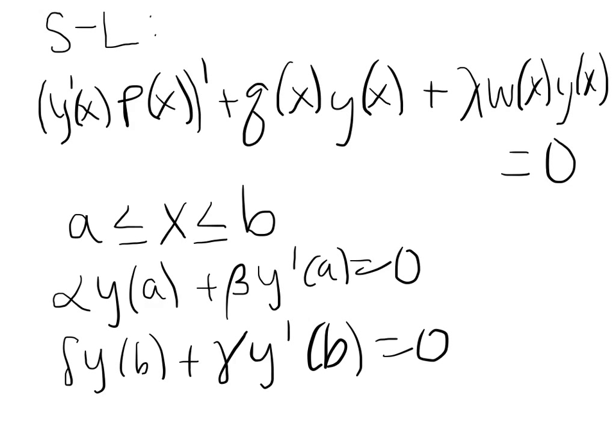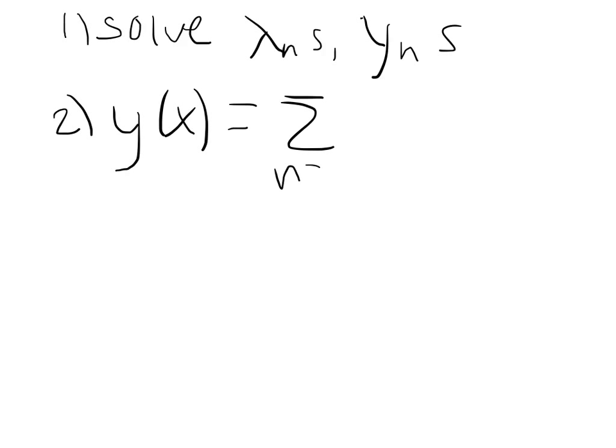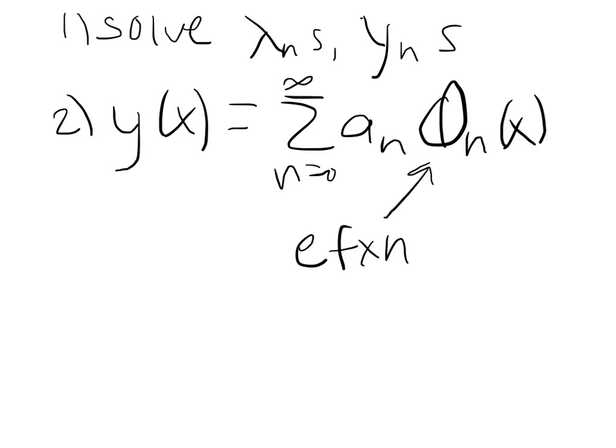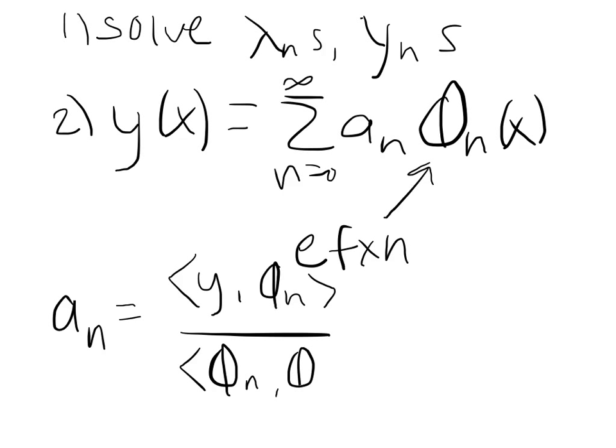Things we can do with these kind of problems: we can solve for the actual eigenvalues and eigenvectors. We can also rewrite all of this as an infinite series in the form y(x) = sum from n=0 to infinity of a_n φ_n(x) where φ_n is some eigenfunction and a_n is defined as the inner product of y and φ_n scaled by the magnitude of φ_n.